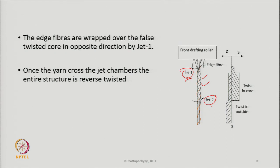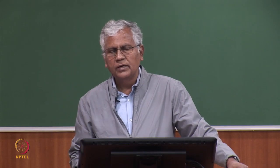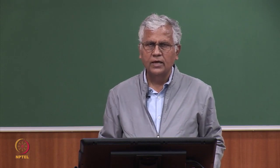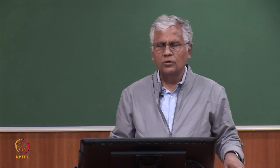If there is only one jet, yarn will still be formed. However, that yarn will not be very strong because some edge fibers will still get caught by the balloon yarn and be twisted and wrapped to some extent. When the entire core loses twist, these edge fibers will be wrapped in the opposite direction due to the first twist the core received. With a single jet, yarn can be formed but it will be weaker. To enhance strength, jet 1 exists to pre-wrap the edge fibers around the core in advance.